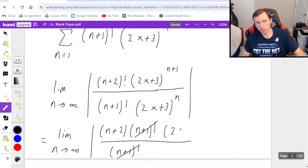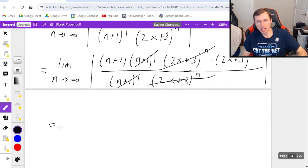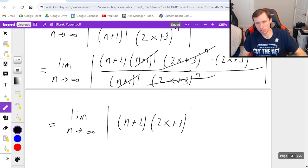And continuing with the two x plus three that's going to be rewritten as two x plus three to the n times two x plus three to the first all divided by two x plus three to the n. Close absolute value. The two x plus three to the n cancels. And I'm just left with this. Limit n goes to infinity absolute value. The entire denominator is gone which is great. And I'm just left with n plus two times two x plus three.